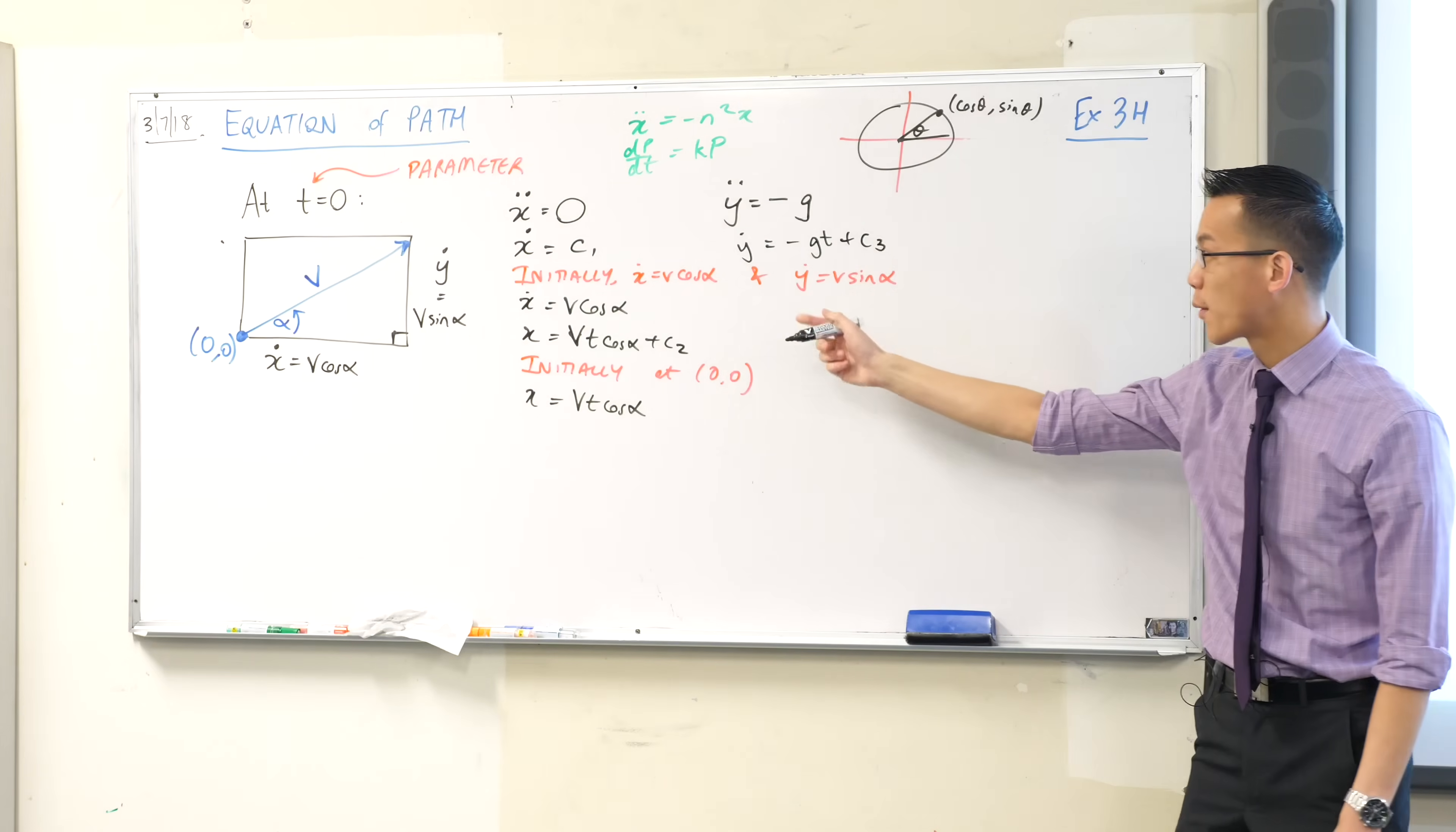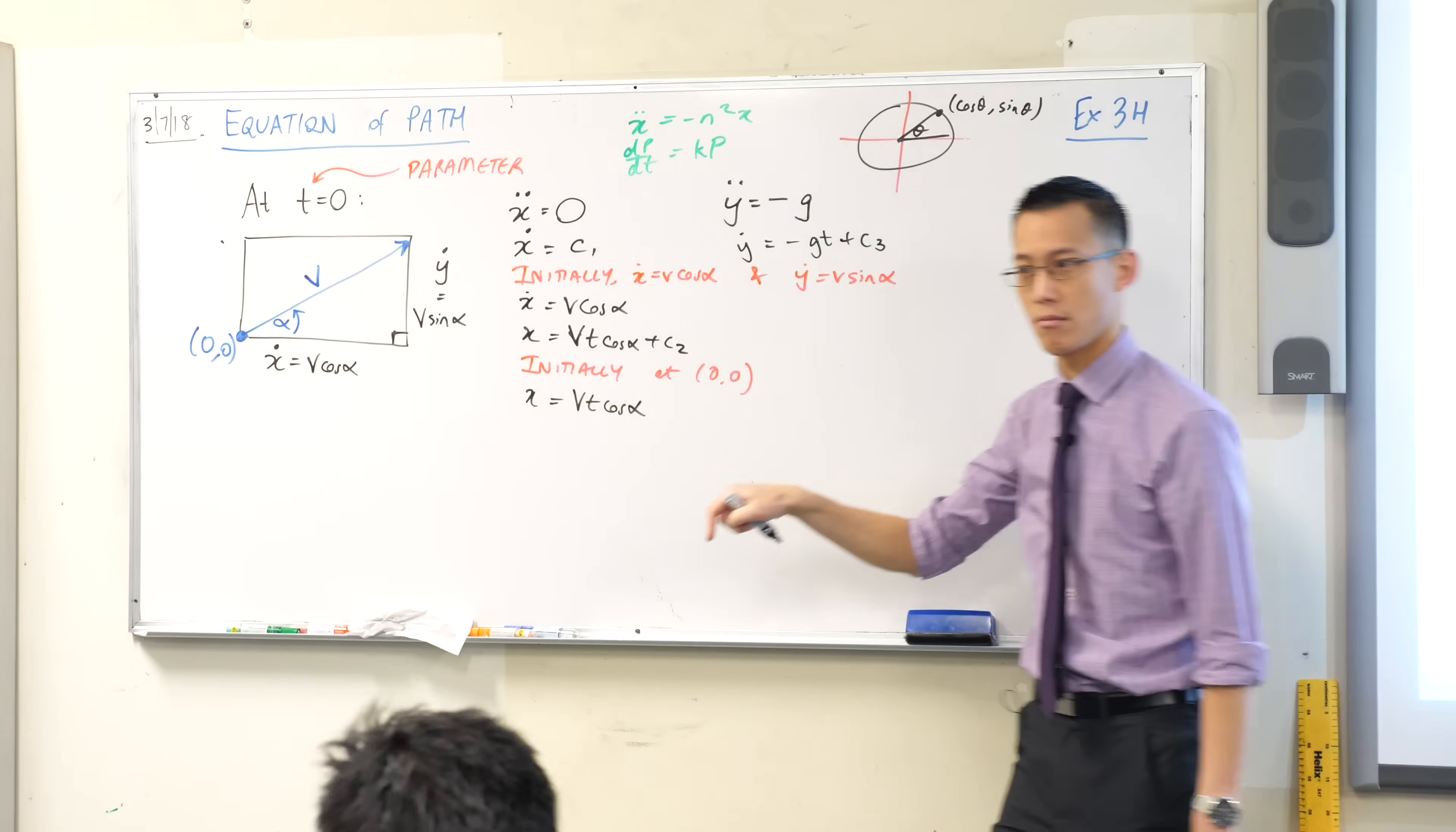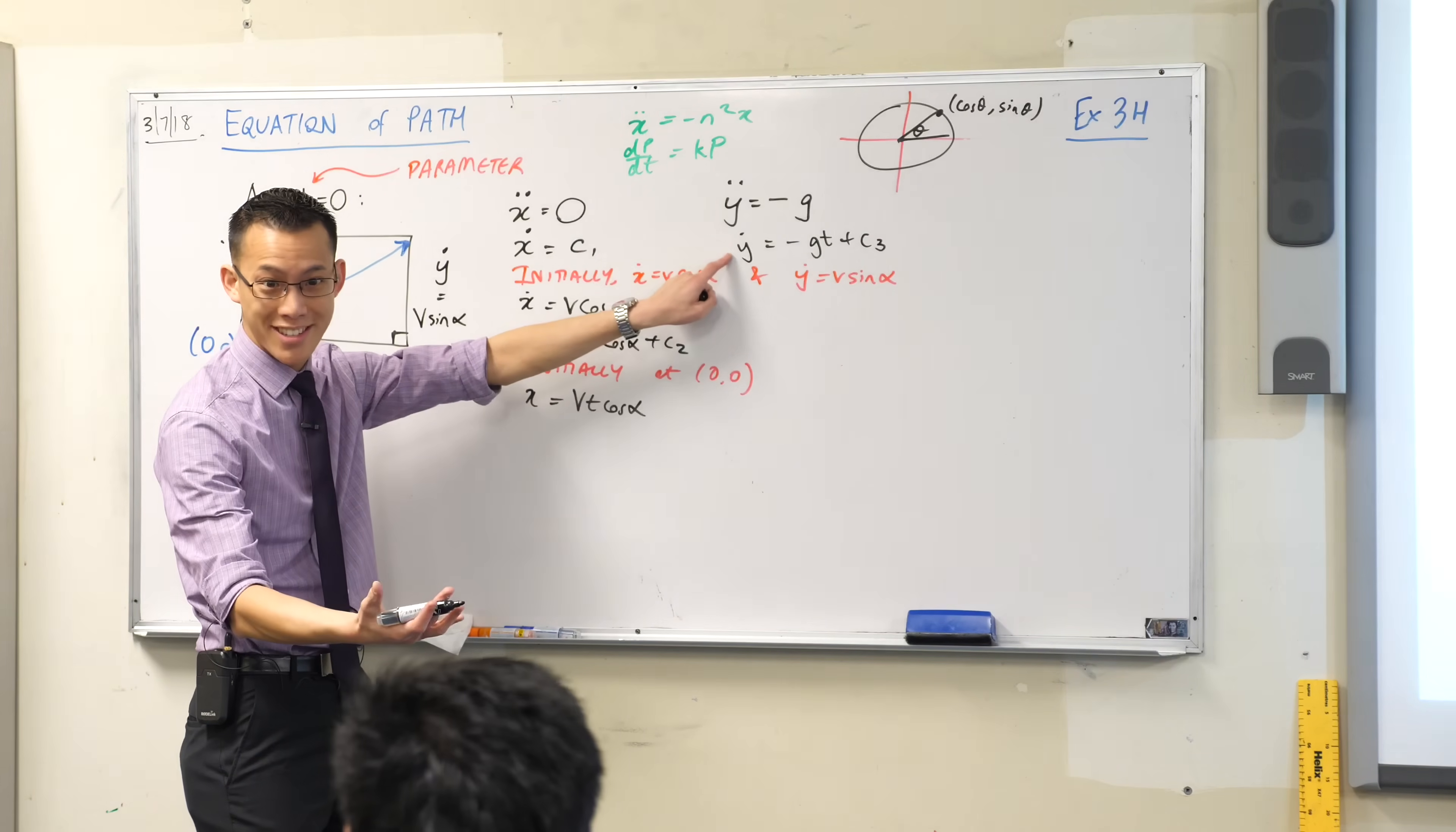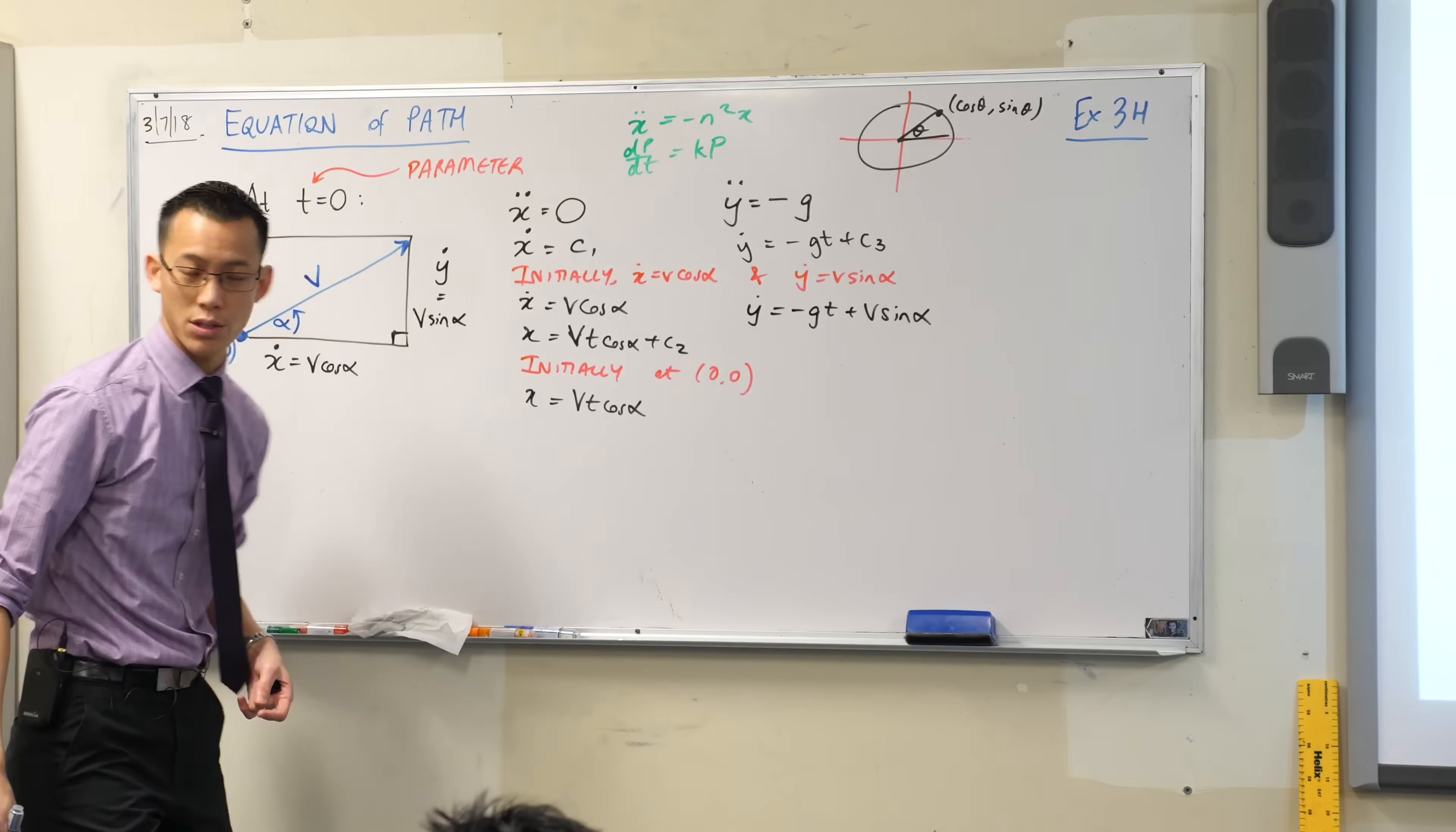Now, just like I did before, I'm going to use my initial conditions which handily I have written on the board already. When I say at t equals zero, y dot will be v sin alpha. So what will this constant be? When you've got zero here and v sin alpha here, that's just your constant. You'll end up with c3 over here and v sin alpha here, so that's what the constant is. So I've got y dot equals minus g t plus v sin alpha, like so.